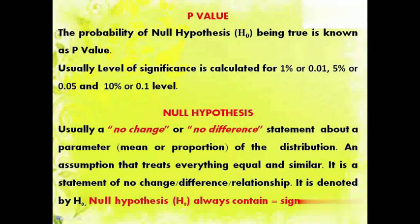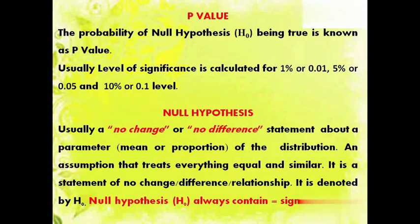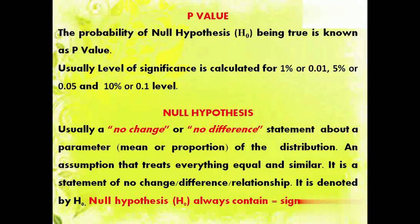Null hypothesis is usually a no change or no difference statement about a parameter, mean, or population of the distribution. It is an assumption that treats everything as equal and similar. It is a statement of no change, difference, or relationship. It is denoted by H-naught sign, and null hypothesis always contains an equal-to sign.